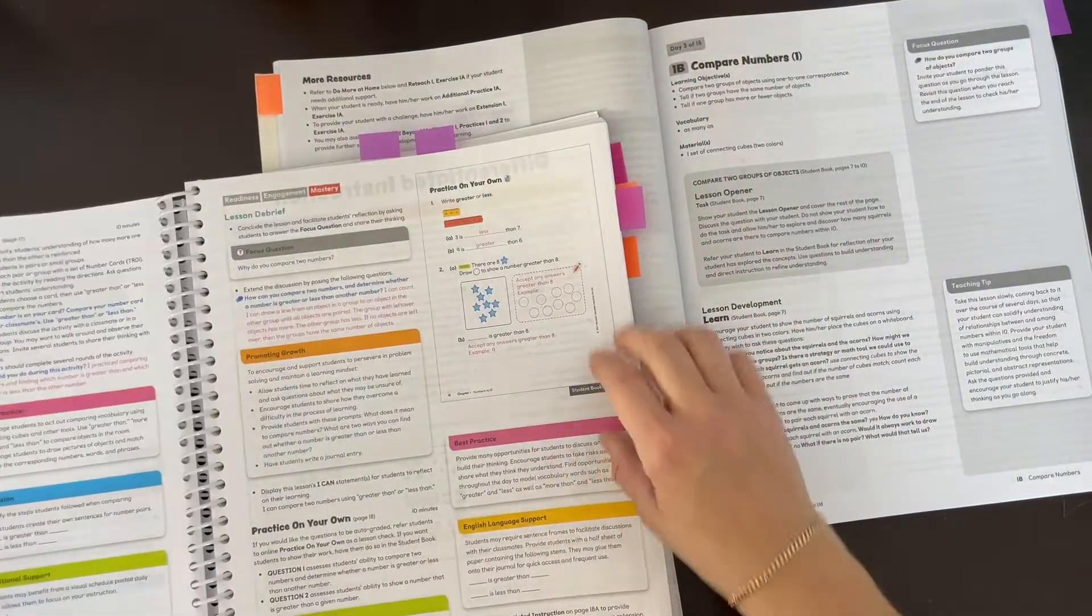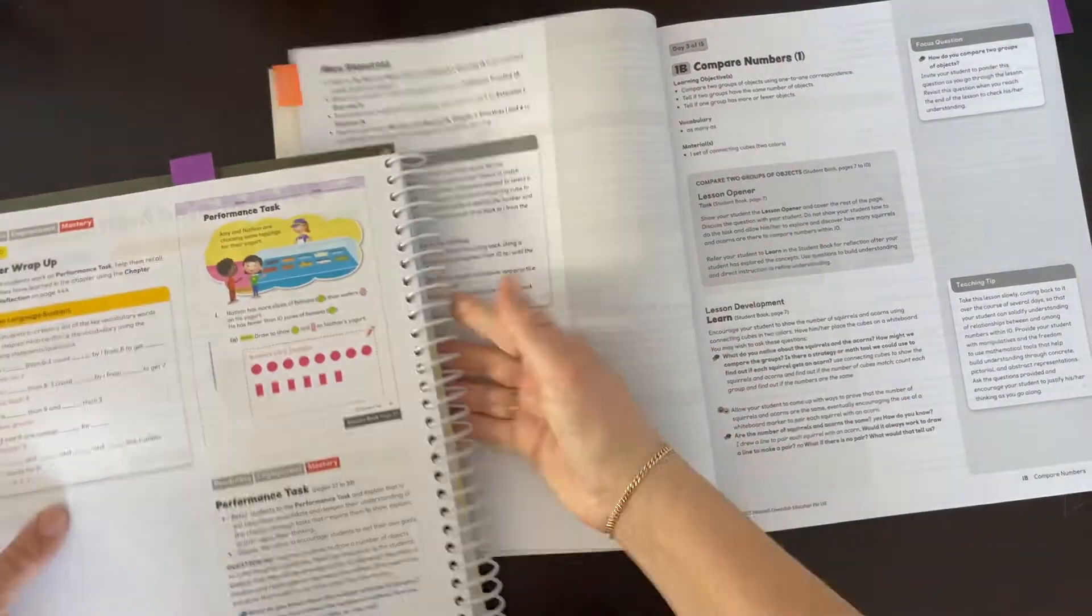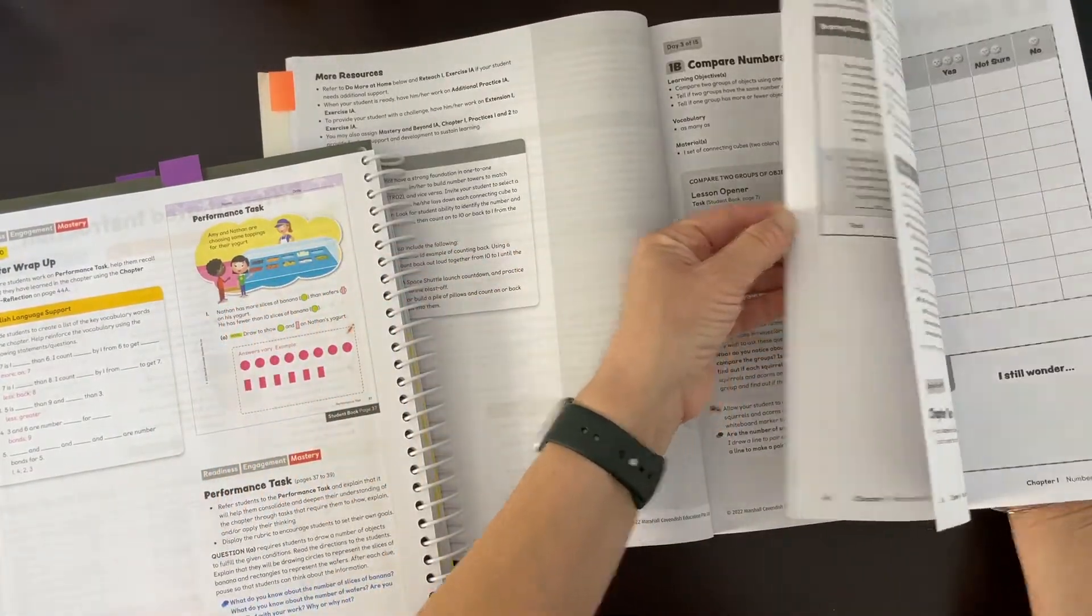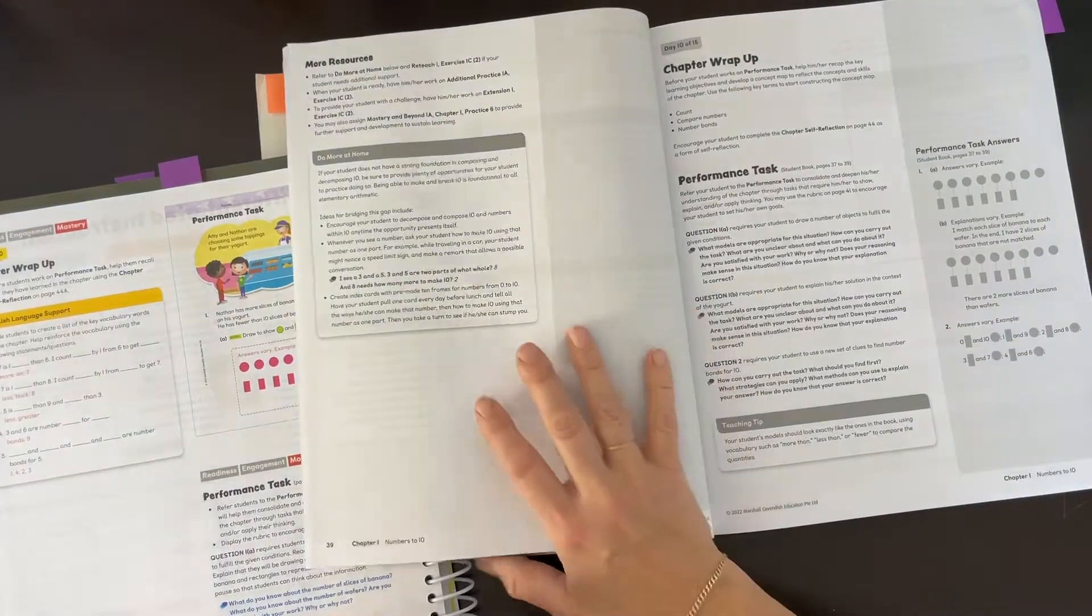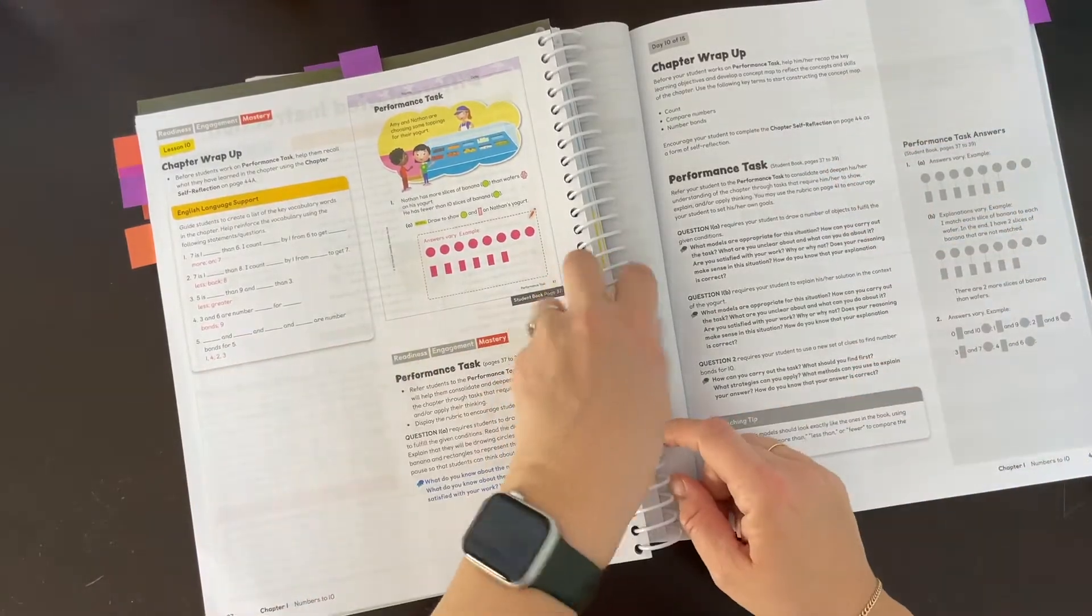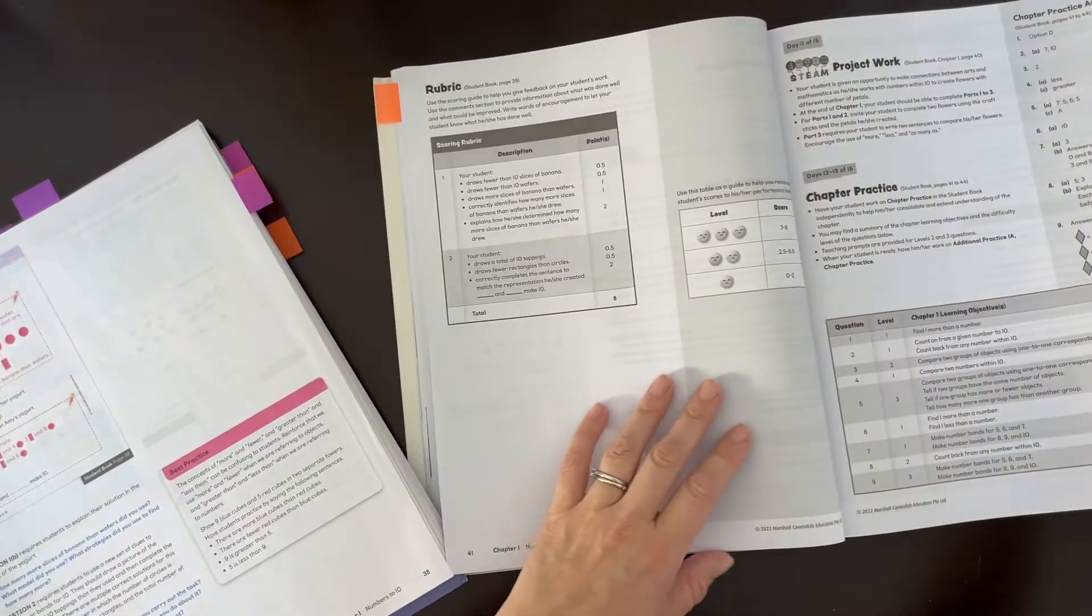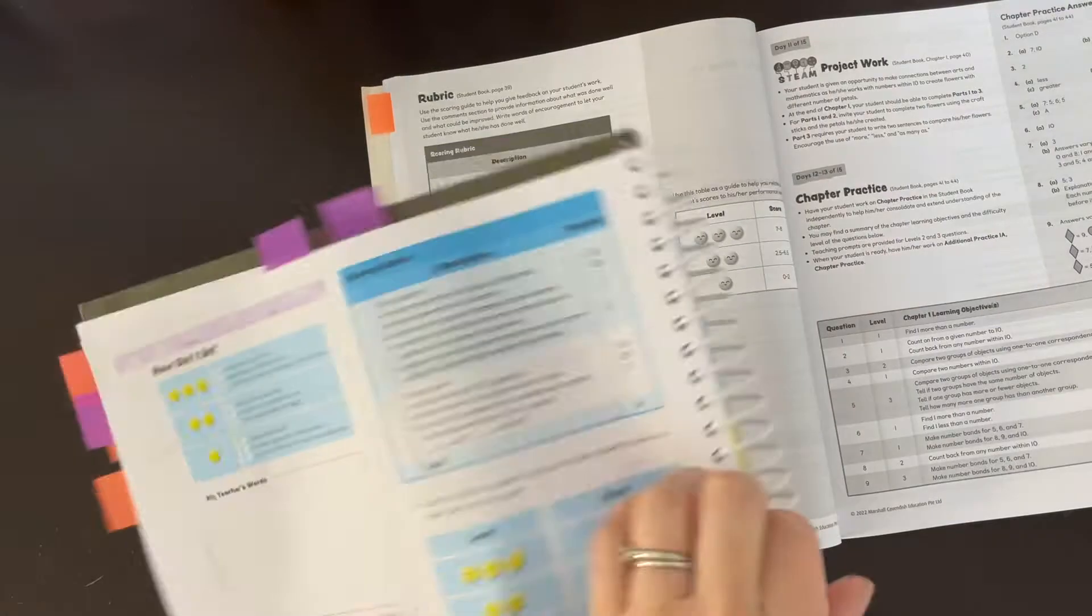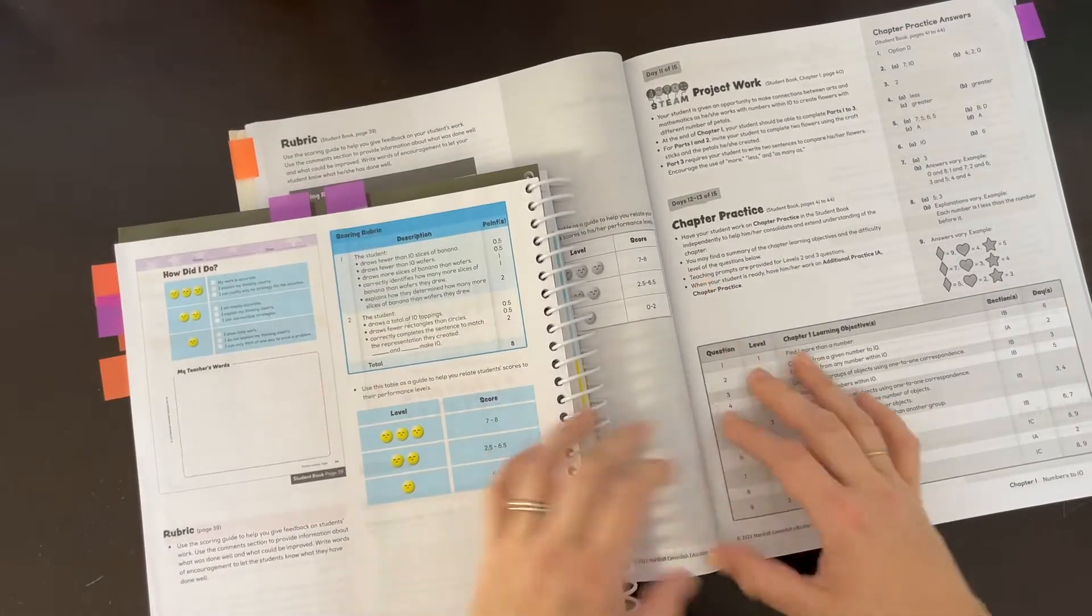All the lessons are pretty much set up that same way. Let's see if we can get to the chapter wrap-up. Here's the chapter wrap-up—we have the performance task. Going through the performance task, they do include the rubric in the home instructor's guide for the performance task, although in the teacher guide we have that full color version and the student page.